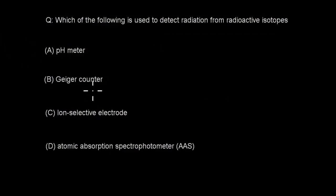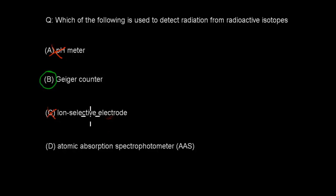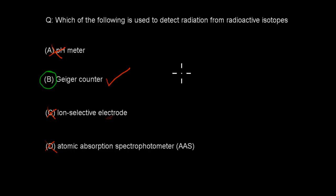The correct answer for this one is the Geiger counter. The pH meter is wrong because it obviously measures pH, not radiation. The ion-selective electrode — the name 'electrode' gives it away; it relates to electrochemistry and measuring voltage, so that's also wrong. The atomic absorption spectrometer is used to detect chemicals in samples, not to do with radiation. So D is also wrong, and the correct answer was B, Geiger counter.